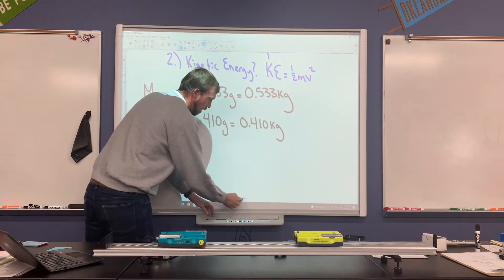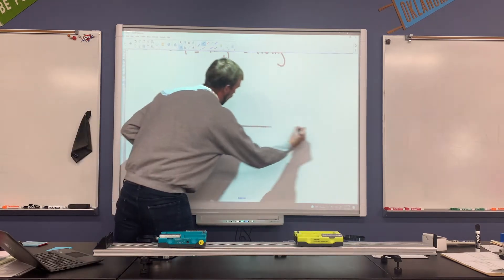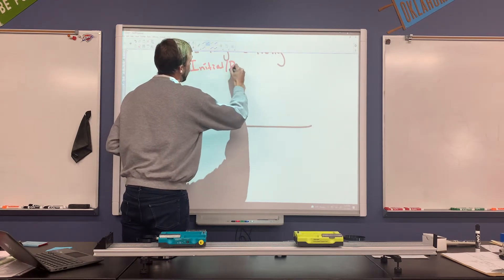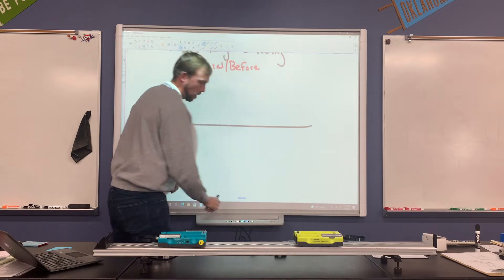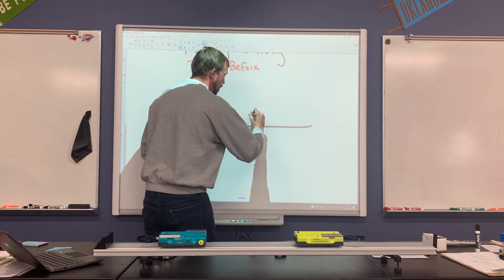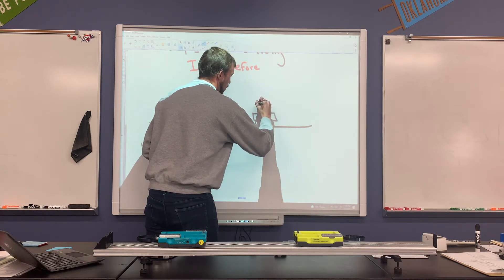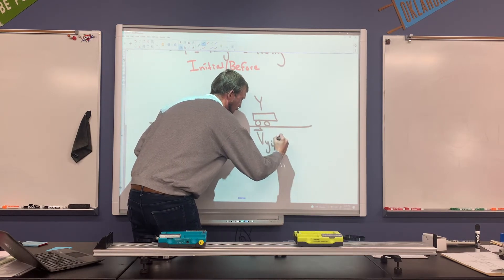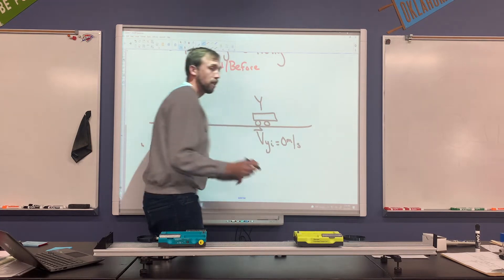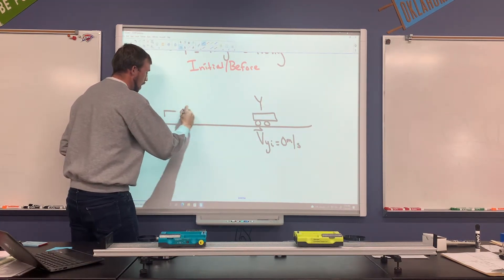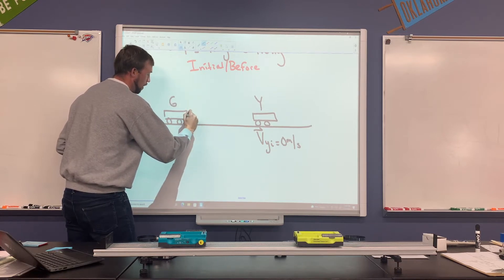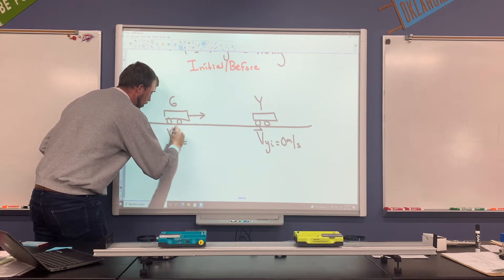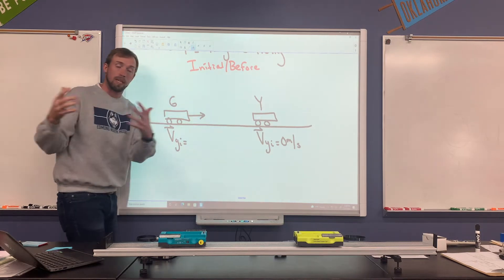Here's how I'm going to set this up — I'll draw a picture to model the scenario. Here's our track; we're looking at the initial situation before the objects collide. From your vantage point, the yellow cart is over here, and the velocity of the yellow cart initial, VYI, is 0 meters per second — we're setting the yellow cart initially at rest. The green cart is over here moving toward the yellow, and velocity of the green cart initial is unknown for now.